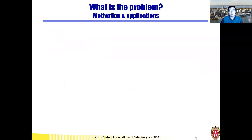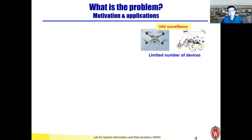So what is the problem? This research is motivated from several applications encountered in practice. The first one is in UAV surveillance. Each UAV is equipped with a sensor device that can monitor a certain area of interest, highlighted in yellow. However, in practice we often face much larger surveillance needs but only have a limited number of UAVs. So one question is: how could we dynamically allocate the location of those UAVs to quickly detect intrusions that can happen in any direction and at any time?